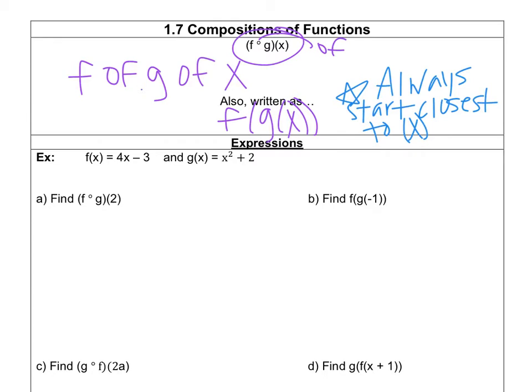On your IXL today, you're only going to be doing problems like A and B, but then tomorrow you're going to do a paper that has these other examples on there. Today on your IXL you're only going to do some easy examples like A and B, but the other ones are coming on the paper you're going to do on Friday. I'm going to use two different colors — one for the F equation and one for the G equation.